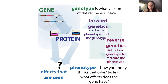For example, take fur color in mice. Say there's a gene that causes mice to have brown fur, and scientists want to find what this gene is. So if they take mice with brown fur and then look to find what it is in their genotype that causes that brown fur, that's an example of forward genetics — you're starting with the phenotype and looking to find the genotype.